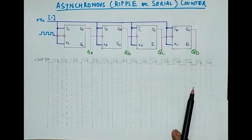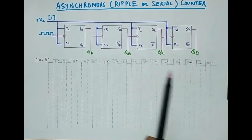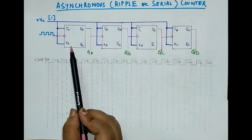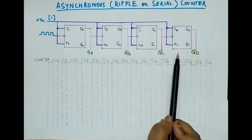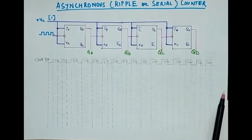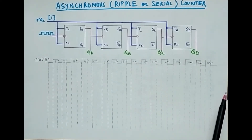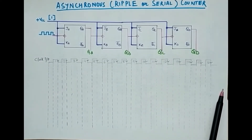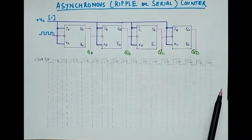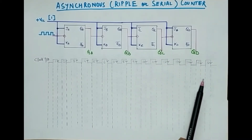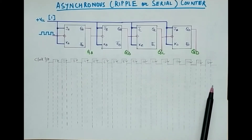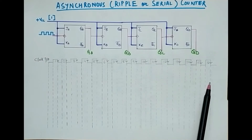Now let us see how it will operate. In this diagram I have taken a JK flip-flop. You can use a JK flip-flop or a T flip-flop. We are taking JK or T flip-flop because they have the toggle operation, and that operation is basically used to count the digits or to count the sequences.